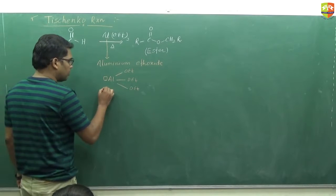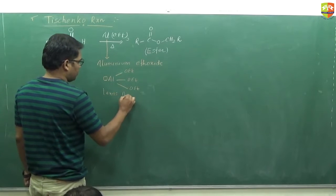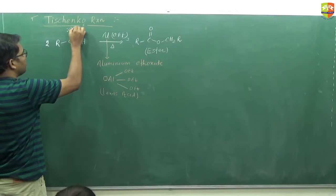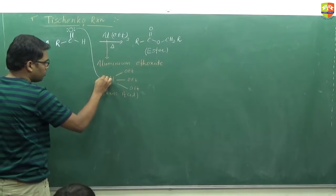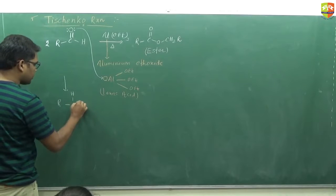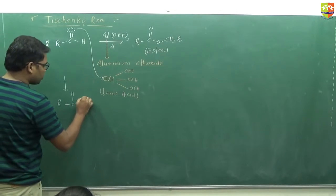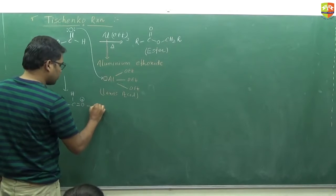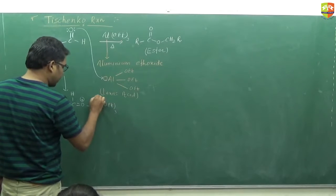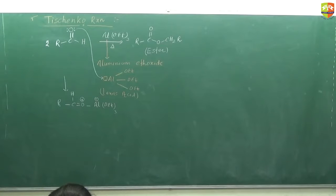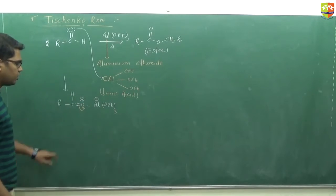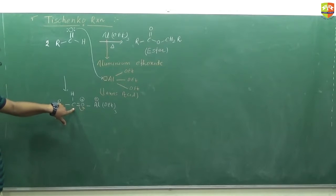And hence what happens: this lone pair has a tendency to donate to aluminium's vacant orbital. So the first step of the reaction is: RCHO, where oxygen donates its electron pair to Al(OEt), giving oxygen a positive charge and aluminium a negative charge, because it accepts the electron.